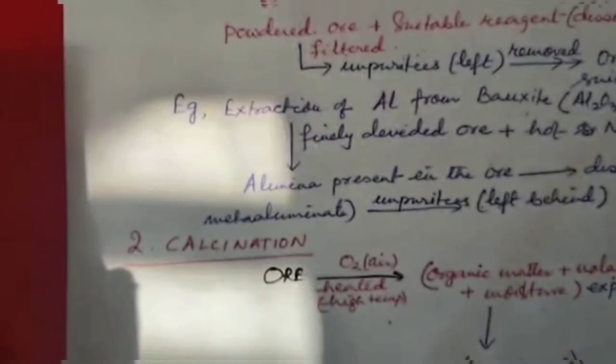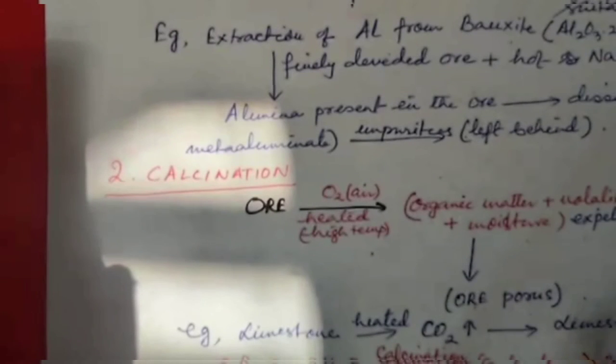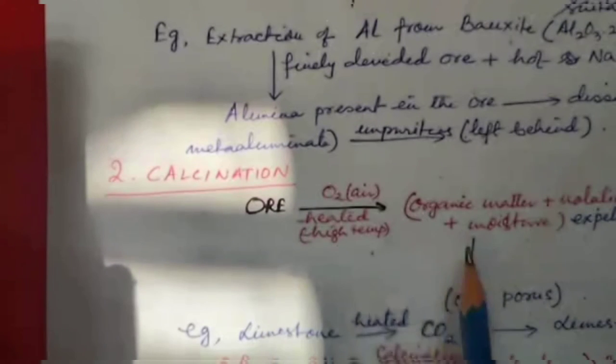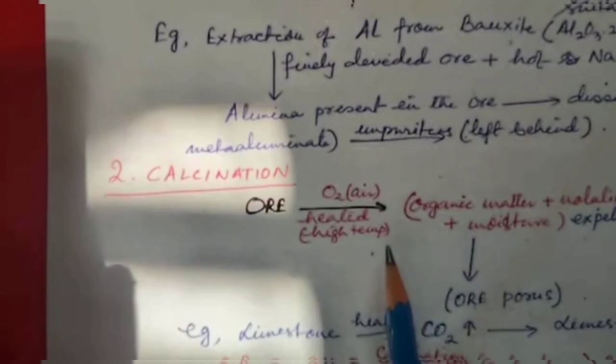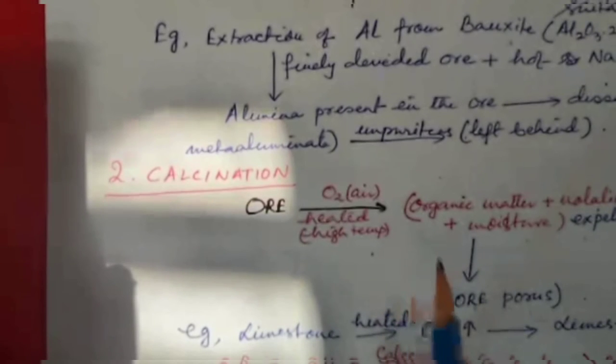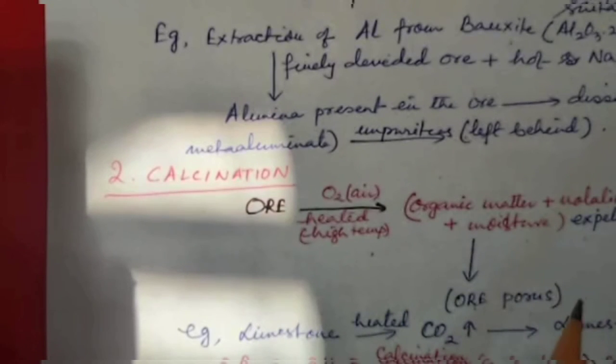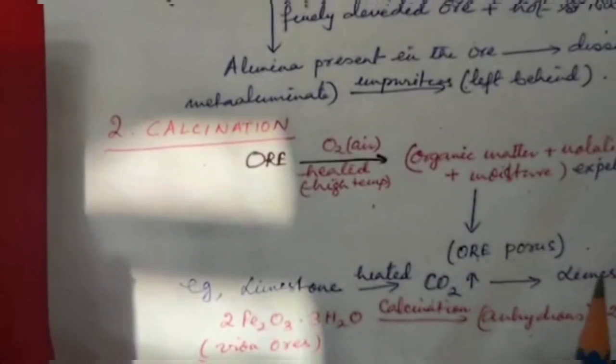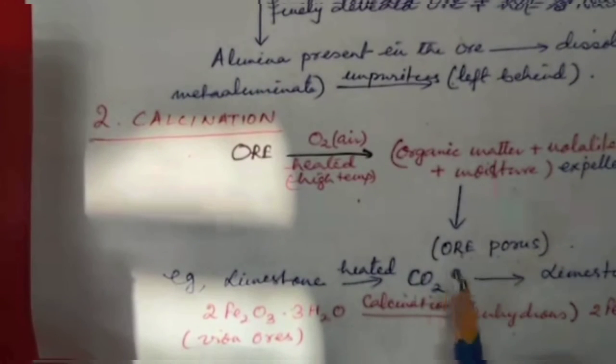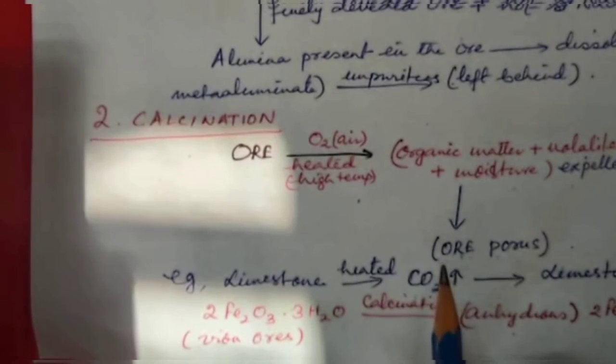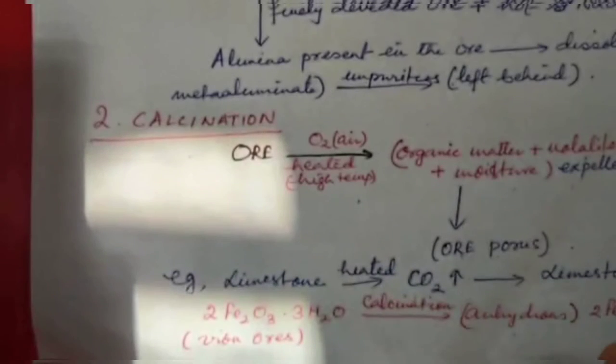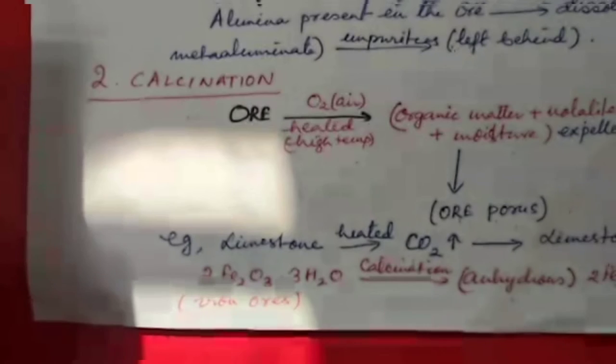Calcination: In this process, the ore is heated in a limited supply of air at a temperature insufficient to melt it. During calcination, organic matter, volatile impurities, and moisture present in the ore are expelled, and the remaining mass becomes porous.